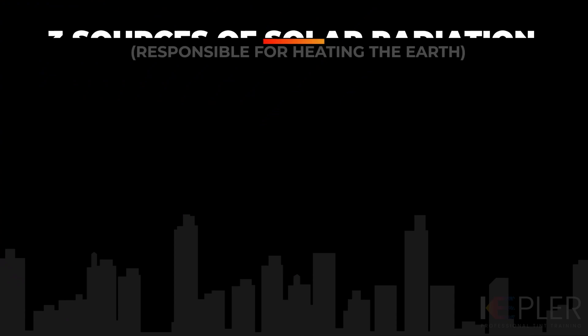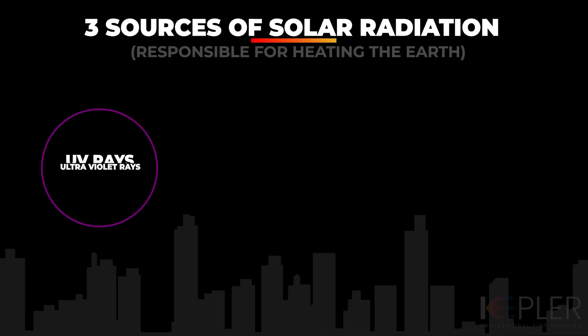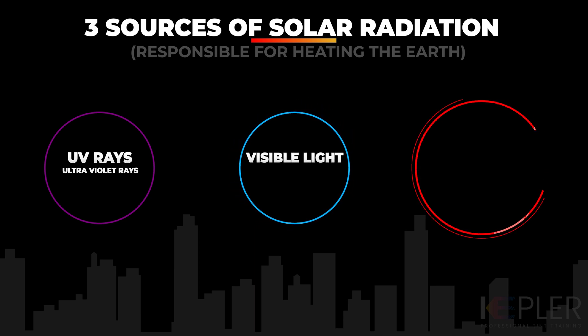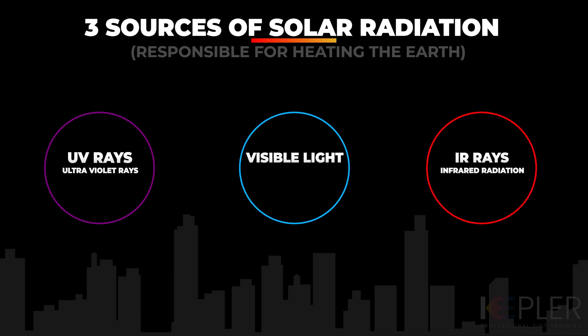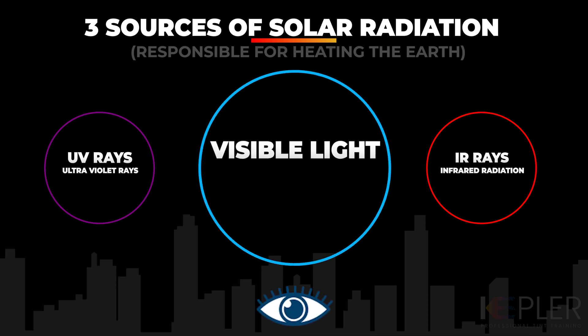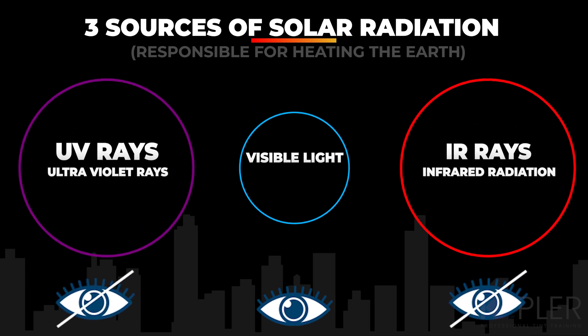First we're going to talk about the sun, solar energy, and what it does to the earth and the glass that we tint. The three sources of solar energy we need to focus on are: ultraviolet rays, also known as UV rays; visible light; and infrared radiation, also known as IR. Only one of these sources can we actually see with our eyes, and that is of course visible light. The other two — ultraviolet rays and infrared rays — are not visible to the naked eye, but we do have instruments that can make it possible for us to see these energy sources. Just because we don't see them doesn't mean they're not damaging our environment or our skin — and window film can battle against each of these three sources differently.